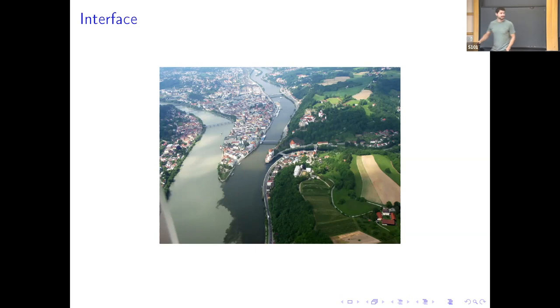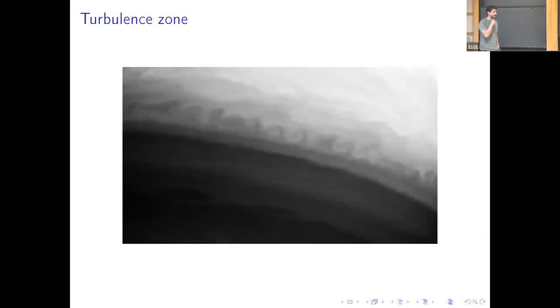In some cases, this interface is unstable and triggers a region, a zone where the fluid may behave turbulent. In this picture, we see two different bands of, I think it's planet Saturn, where we have these two different bands which are almost laminar. But in the curve where there is this discontinuity, this triggers a strip where we can observe these vortices.